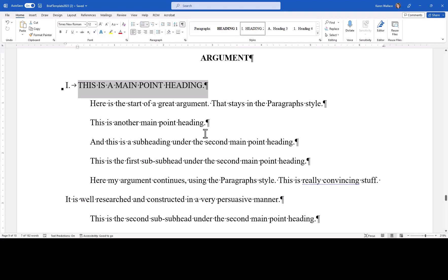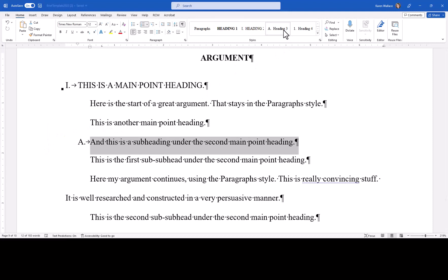For subheadings you're going to use heading 3, so you can select your subheading and then click on heading 3. This will place the text at the capital letter level of the outline. However, note that title case is not baked into the style, so that's something you're going to have to manually correct if you did not already type your heading in title case.